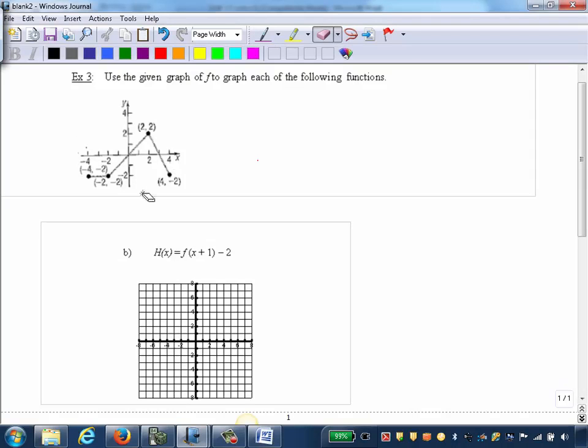So I'm given this function f, and I've got certain key points labeled: negative 4, negative 2; negative 2, negative 2; 2, 2; and 4, negative 2. So they're giving us the key points on the parent function. We won't have to generate those in this example.